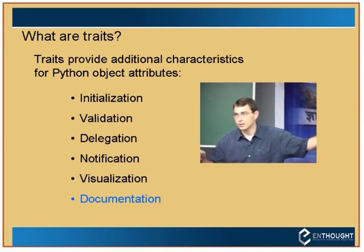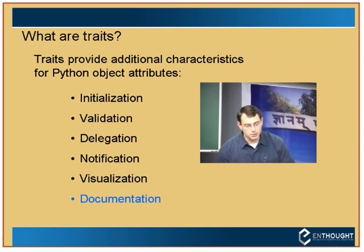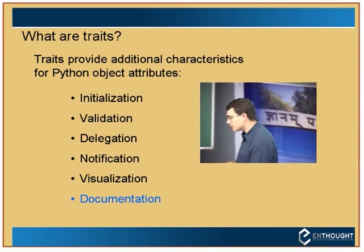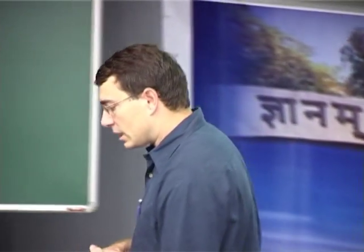Notification is a nice pattern in Traits — a publish/subscribe or observer pattern where you can listen for any change on an attribute in a class. And visualization: because there's more information about these traits, you can get a dialog window up that allows you to manipulate them, or create views that get embedded in larger applications. The last capability is documentation.